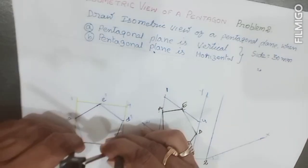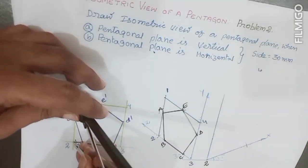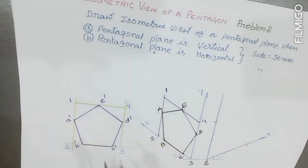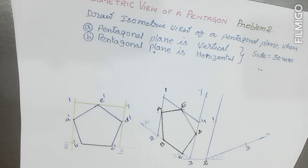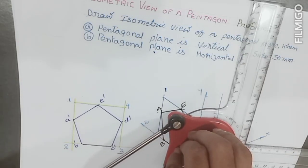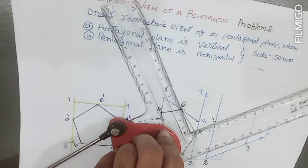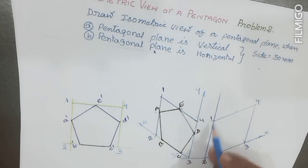Using 2 as center and 2-3 as radius, draw an arc. Then using 2 as center and 2-1 as radius, draw another arc. To locate the 4th point, from point 3 draw a line parallel to 1-2. Similarly, locate the 4th point, say point 4. This completes placing the rectangle in isometric view.